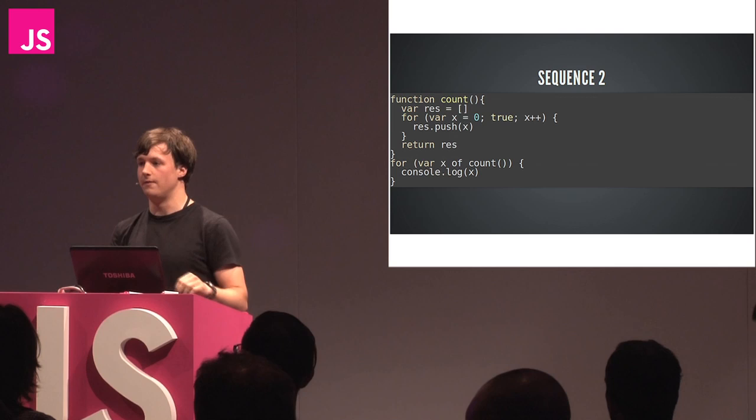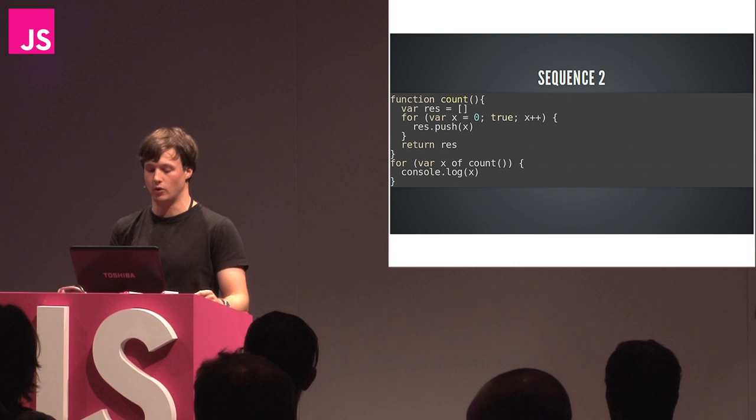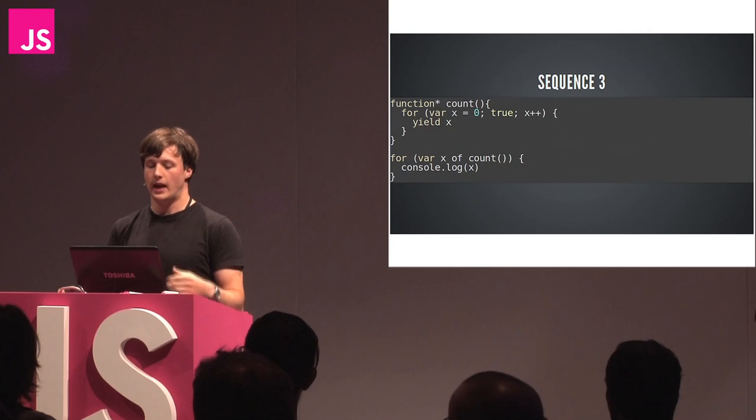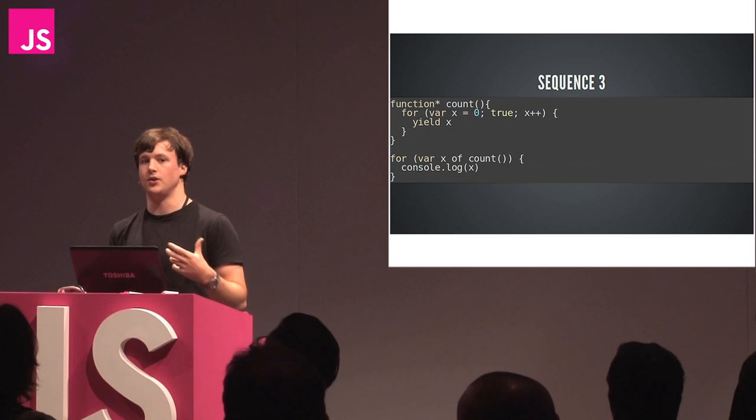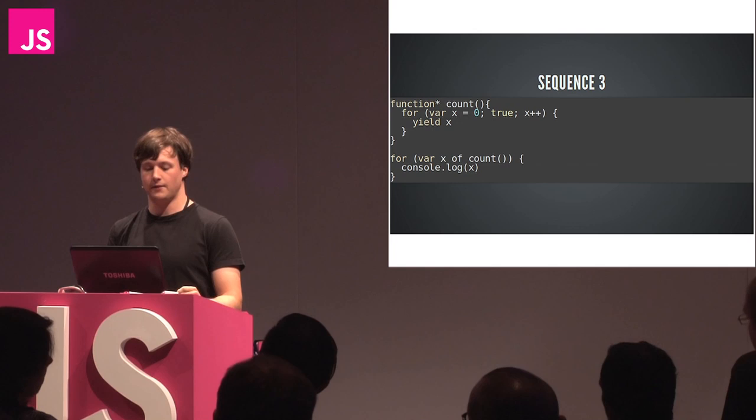The 'for of' there is a new construct that just loops over the items in an array or in a sequence - it supports a much wider range of collections than a traditional for loop. The next version of JavaScript has built-in support for these infinite collections. It works by making the function lazy and only executing as far as it needs to return the values that are actually used.